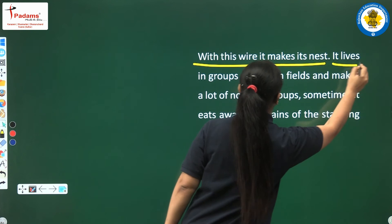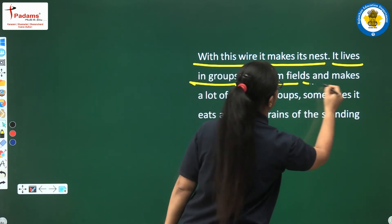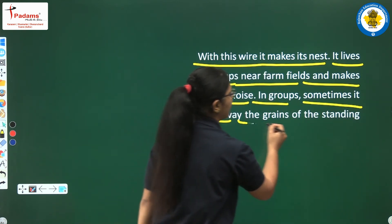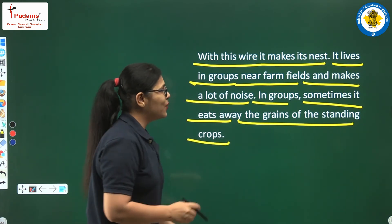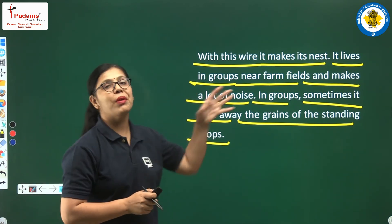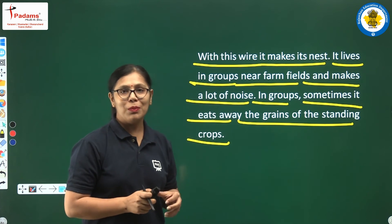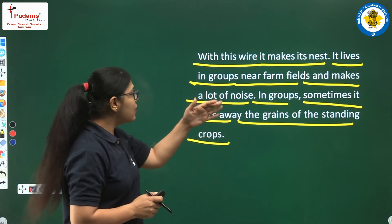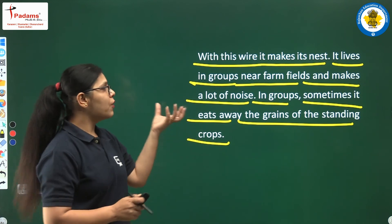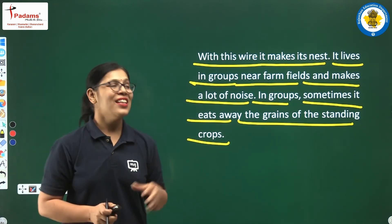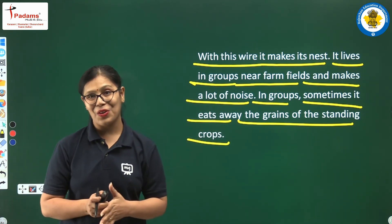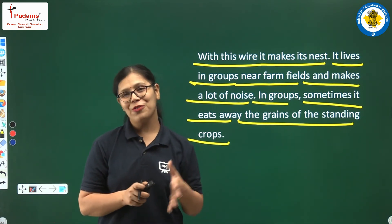It makes its nest from those fibers and lives in groups near farm fields, making a lot of noise in groups. Sometimes it eats away the grains of the standing crops. So the fibers prepared from thick grass are used for making the nest. This weaver bird lives in groups near farm fields and can sometimes be harmful for the crop fields.